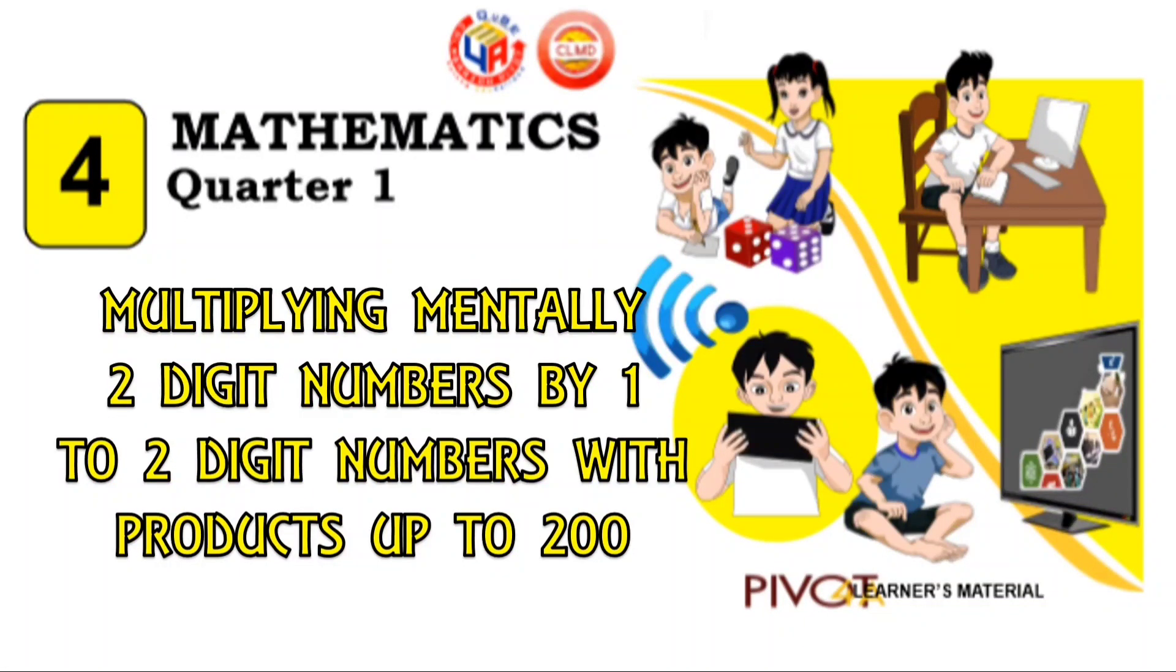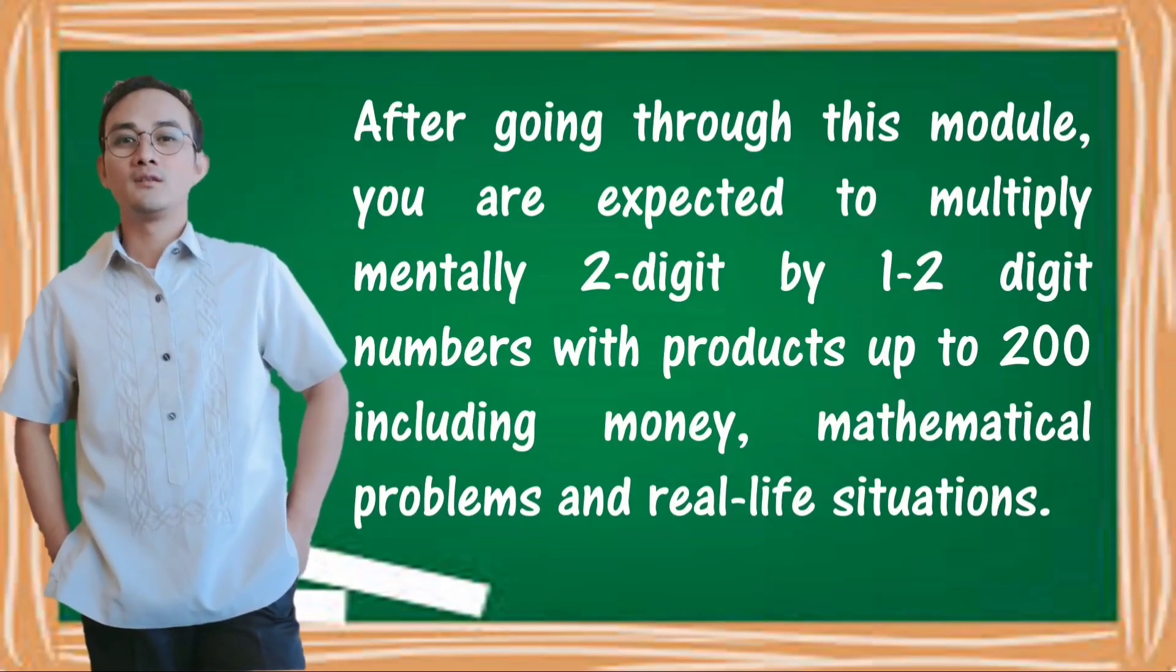Multiplying Mentally 2-Digit Numbers by 1 to 2-Digit Numbers with Products up to 200. After going through this module, you are expected to multiply mentally 2-digit by 1 to 2-digit numbers with products up to 200 including money, mathematical problems, and real-life situations.